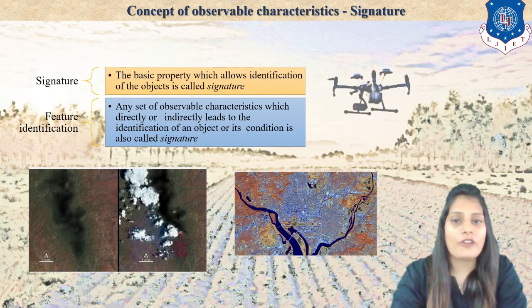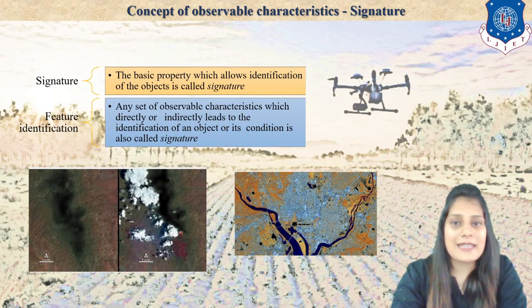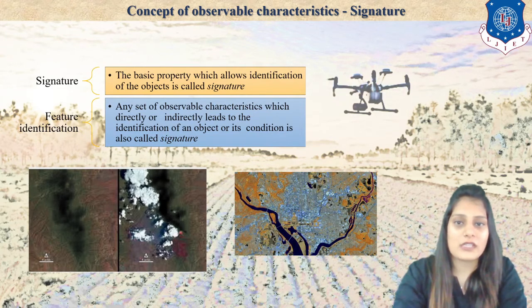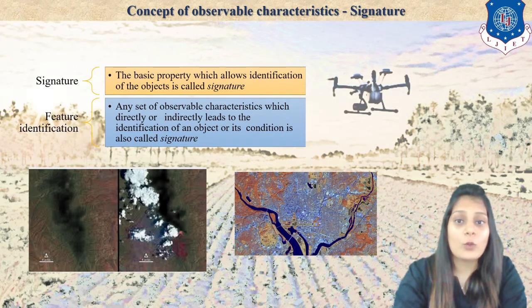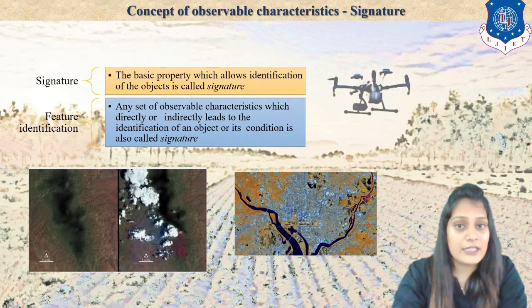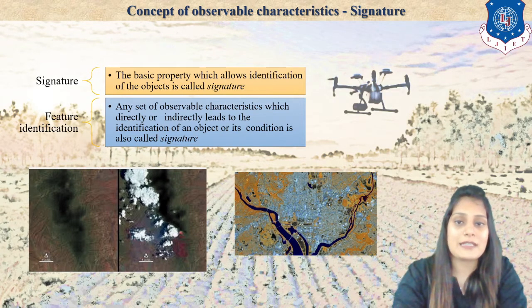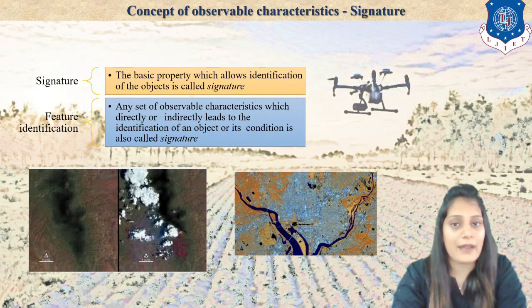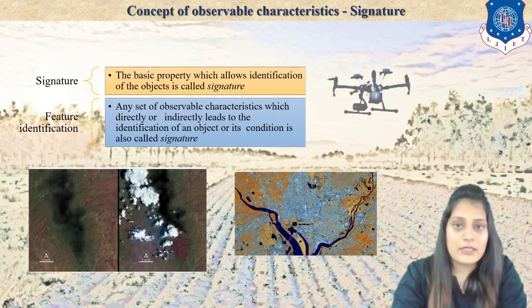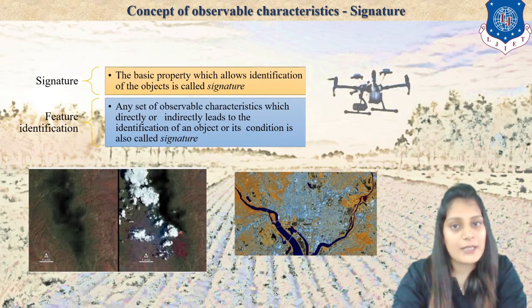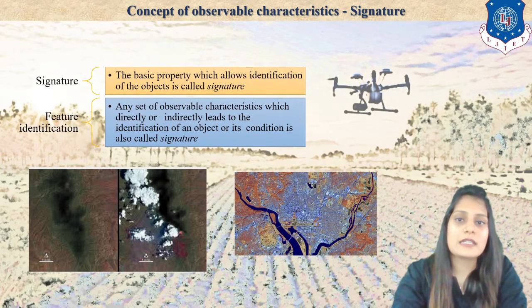This is the concept of feature identification, known as signature. Any set of observable characteristics which directly or indirectly leads to the identification of an object is known as feature identification. Whether it is a railway track, road construction, pavement, railway line, or canal — you identify it by looking at its signature. In the second image, the black color is river-like because water is always indicated as black. We will go into more detail in the next module on digital image processing.